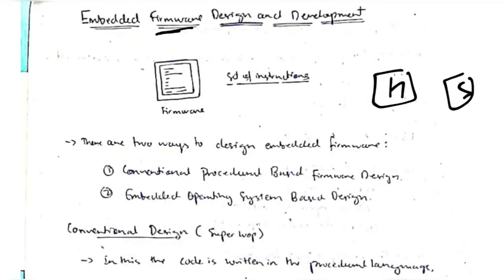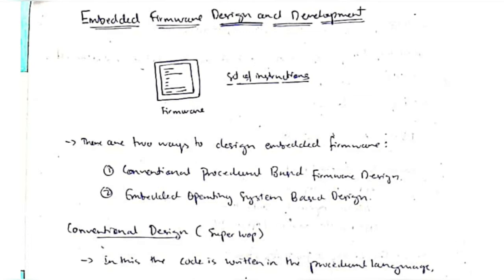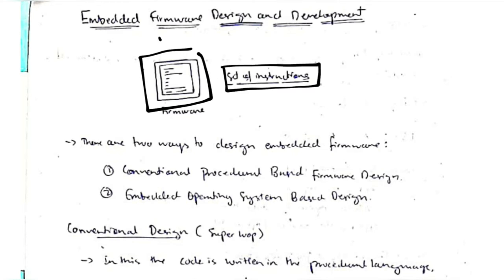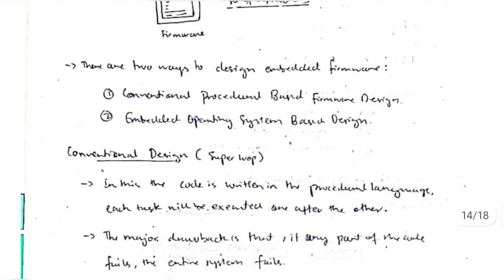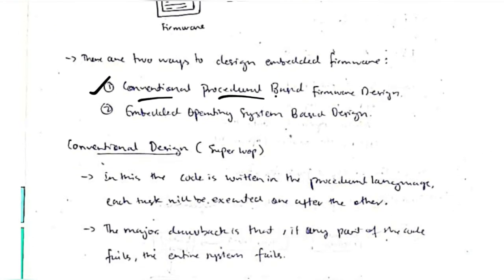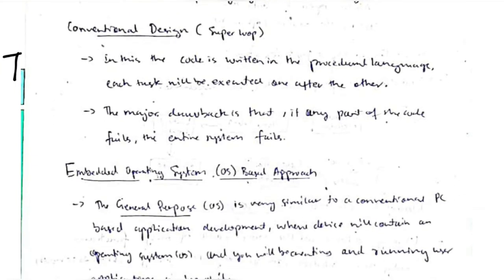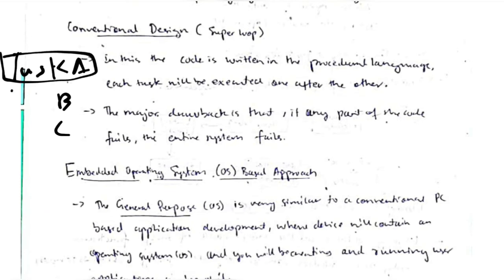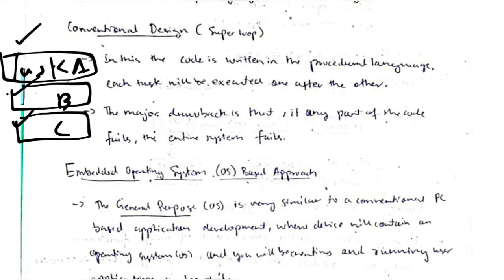Firmware is a combination of hardware and software, having characteristics of both. It is a microchip with a set of instructions written in binary form, making it easier to combine hardware and software. There are two firmware design approaches. The first is conventional procedure-based design: tasks A, B, and C are written sequentially, executed one after another. The major disadvantage is that if any part of the code fails, the whole code will not run.